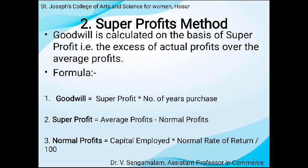Now we are going to see about the second method: super profit method. Goodwill is calculated on the basis of super profit. It is the excess of actual profit over the normal profit. Formula: Goodwill = Super Profit × Number of Years Purchase. Super Profit = Average Profit − Normal Profit. Normal Profit = Capital Employed × Normal Rate of Return.